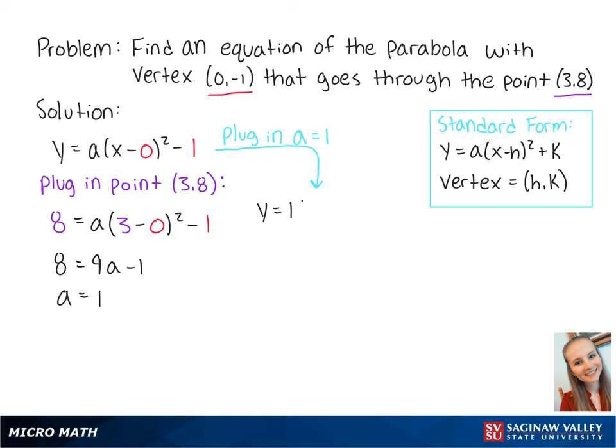giving us y = 1(x - 0)² - 1, which becomes y = x² - 1. This is the final answer.